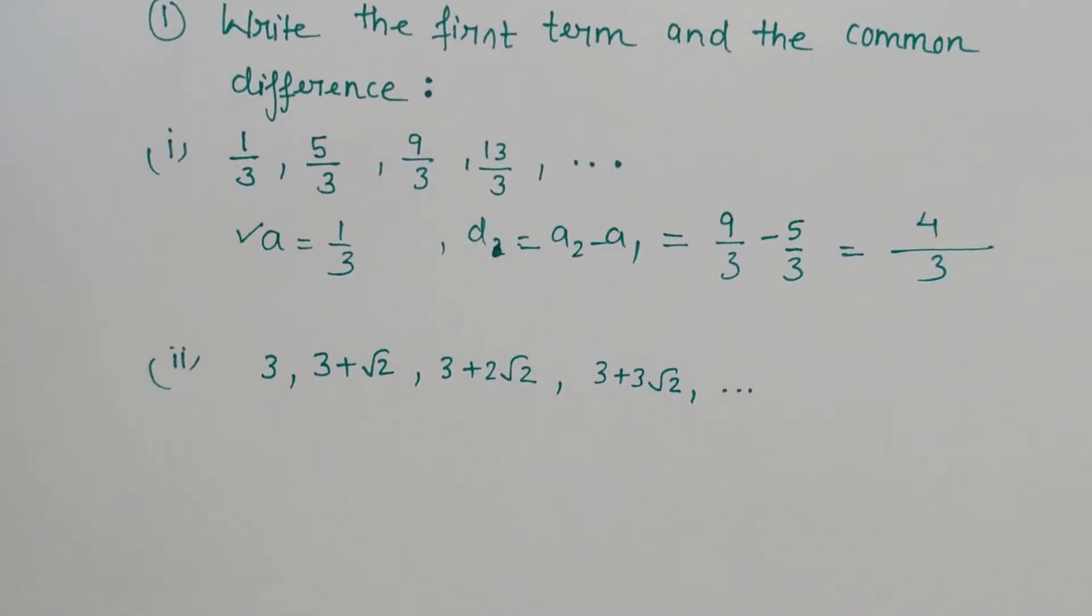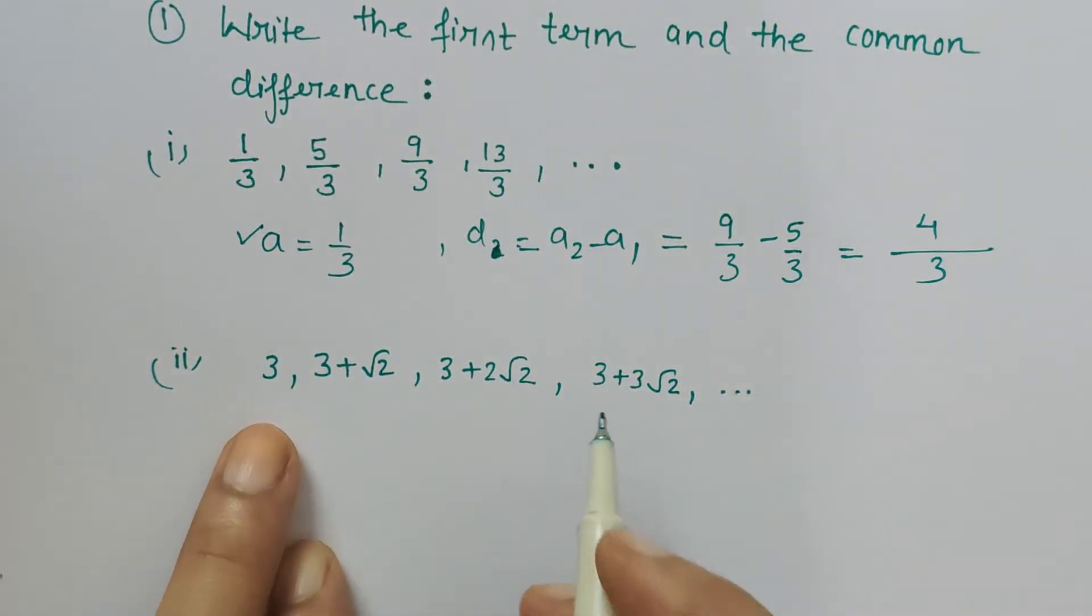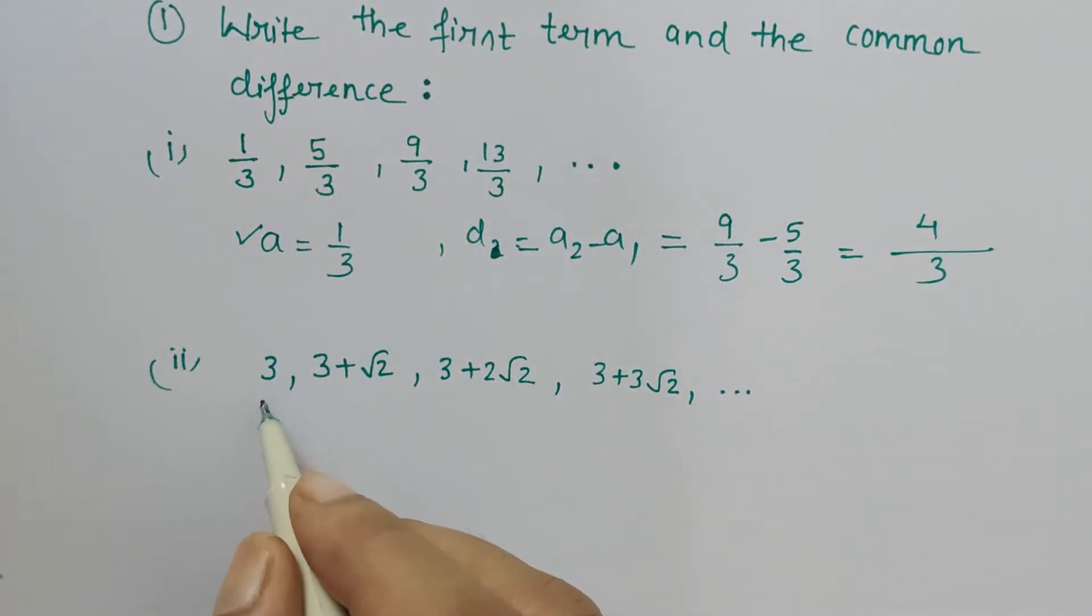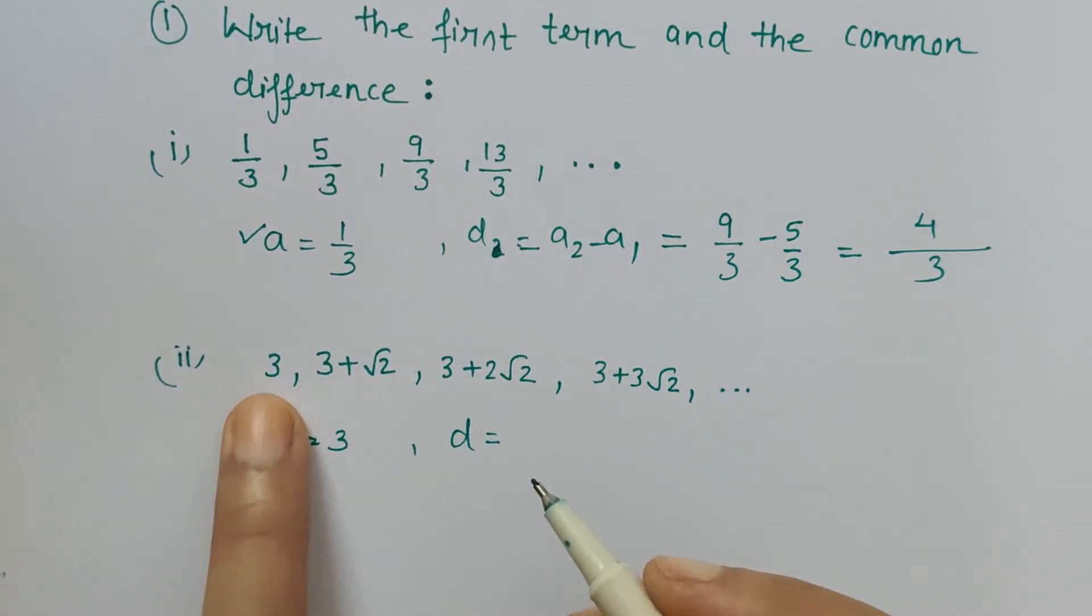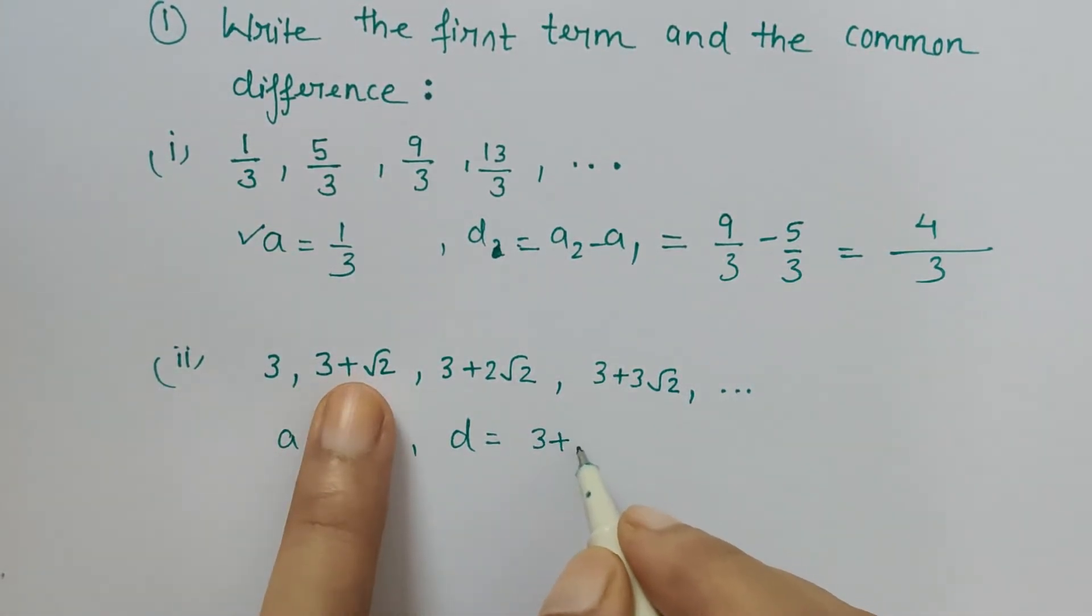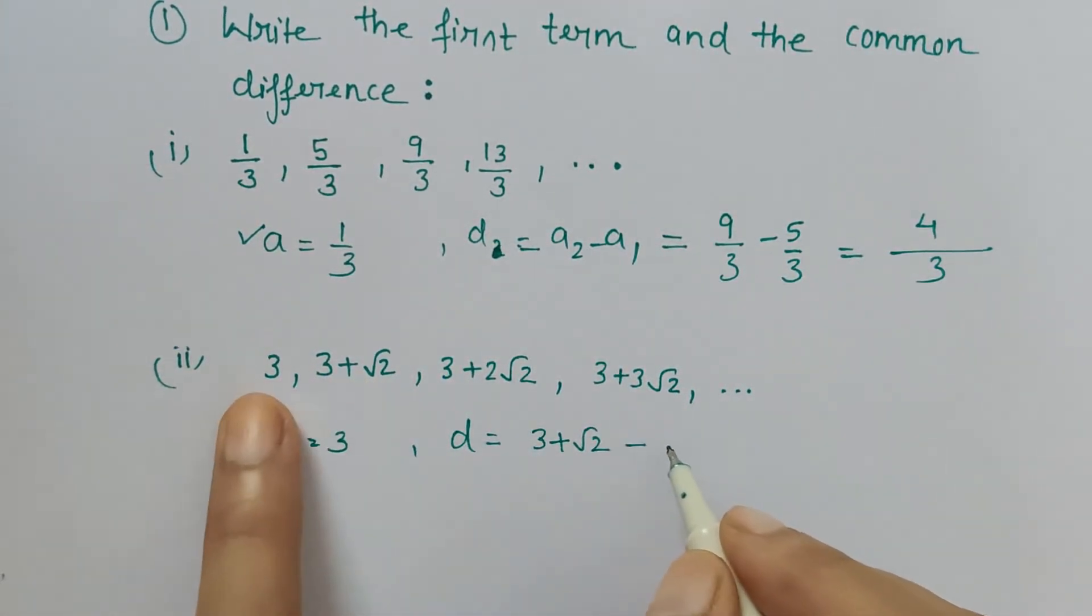Now let's find the same thing for this sequence. It's an arithmetic progression given in the question. Here the first term is 3, and the common difference is second term minus first term. That means (3 + √2) minus 3, so 3 minus 3 is 0, only √2 is left.